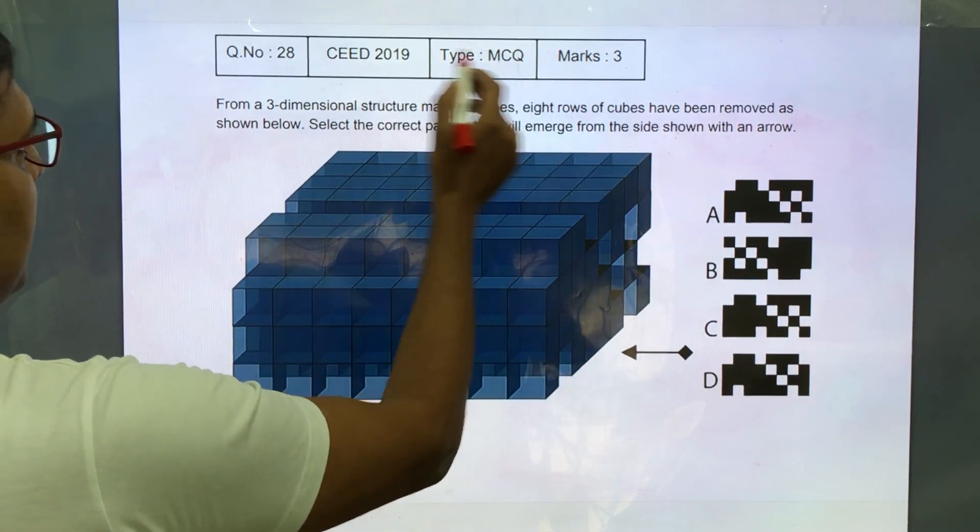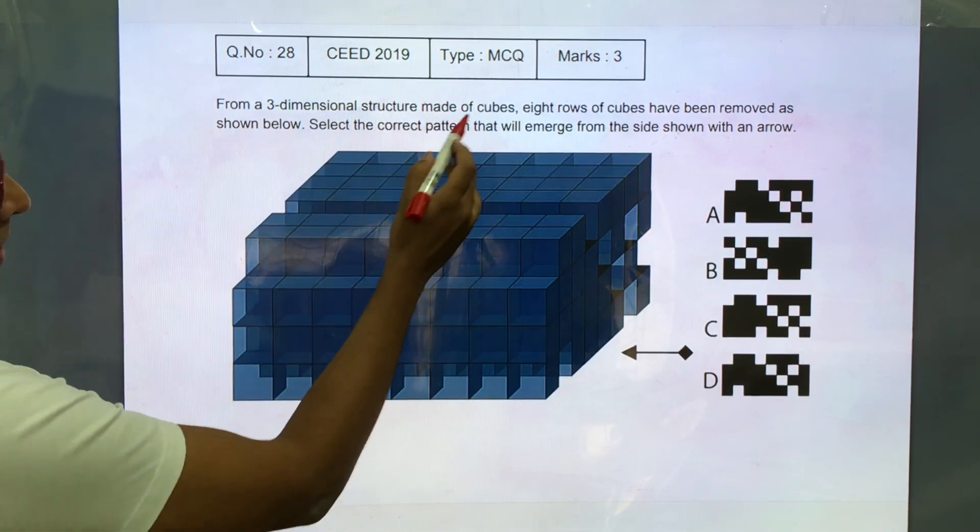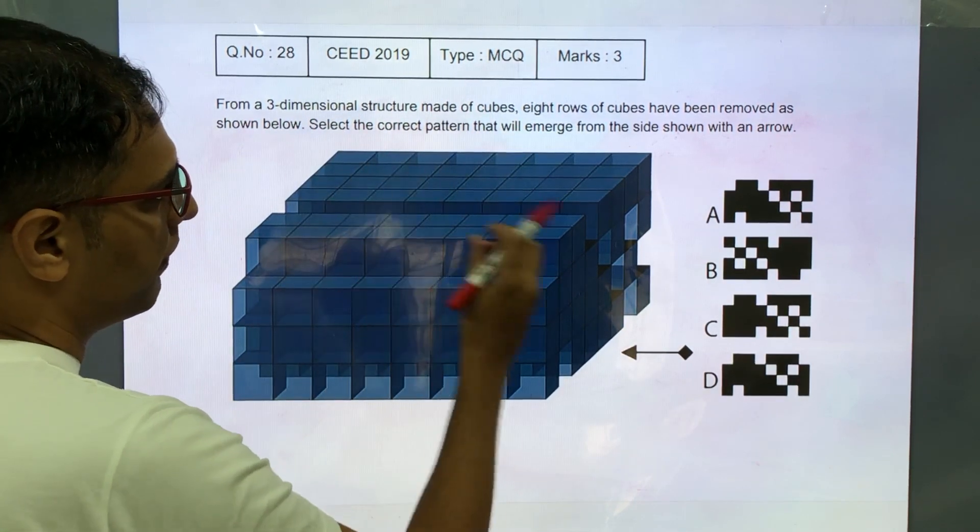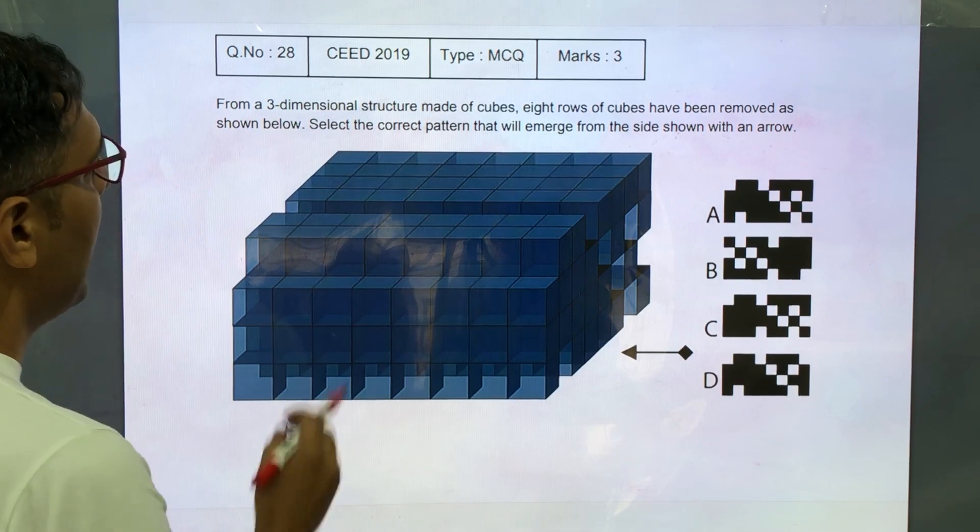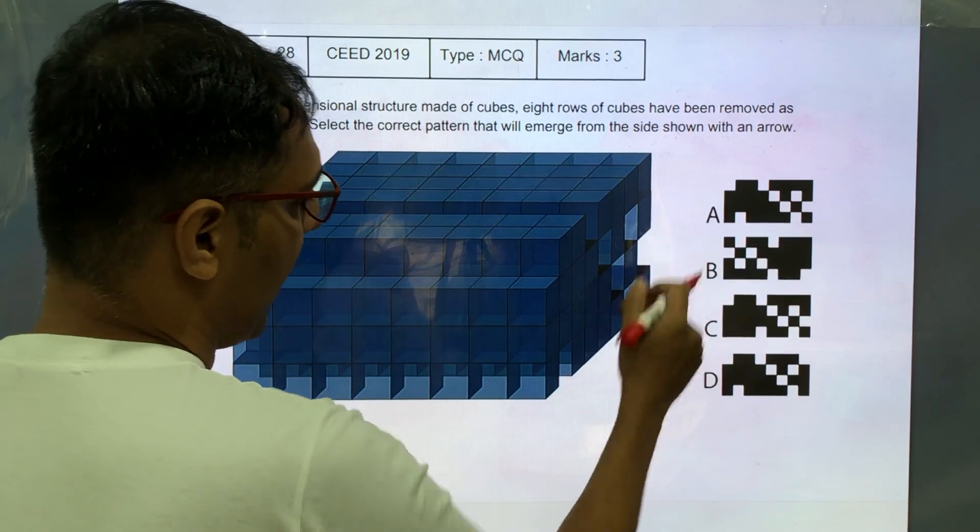This is a MCQ type question for 3 marks from C 2019. From a 3 dimensional structure made of cubes, 8 rows of cubes have been removed as shown below. Select the correct pattern that will emerge from the side shown with the arrow.